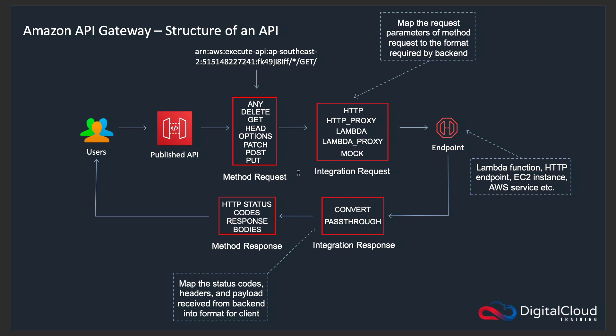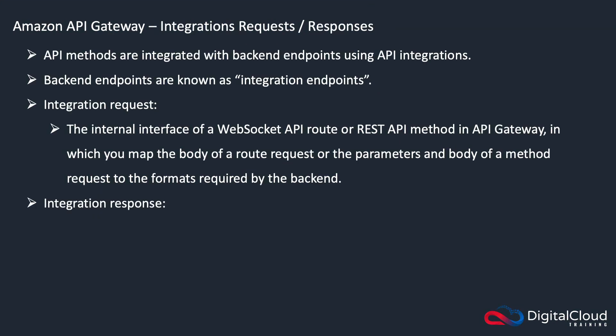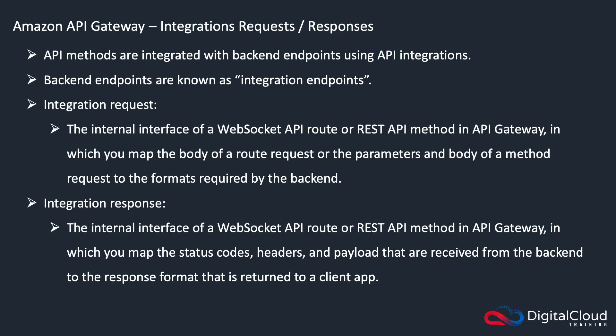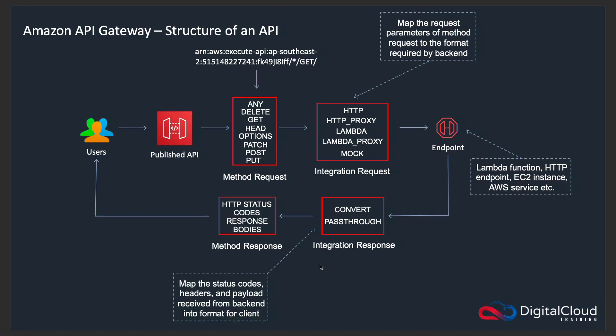Back in the diagram, we're at the integration request, receiving information whether it's a REST API or a WebSocket API, and then we're mapping that information to whatever format is needed by the backend. Then we've got the integration response — this is the internal interface where you're mapping status codes, headers, and the payload received from the backend to whatever format is going to be returned to the client. We perform changes to that data so that the format is correct for delivery back to the client.